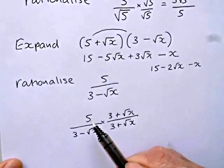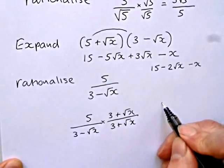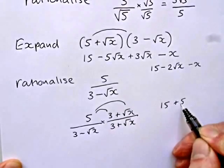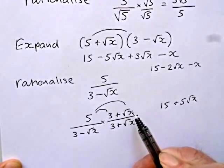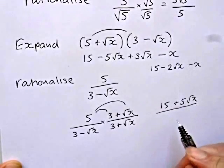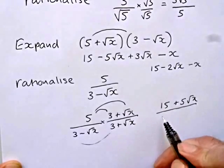So if we now look at this, then we've got 5 times 3 is 15. Let's make sure we do 5 times root x as well, 5 root x. So we've multiplied the top by 3 plus root x. Multiplying the bottom, we get 3 times 3 is 9.